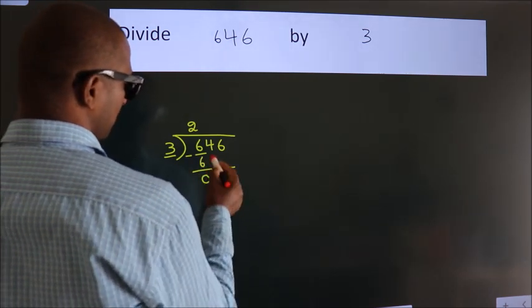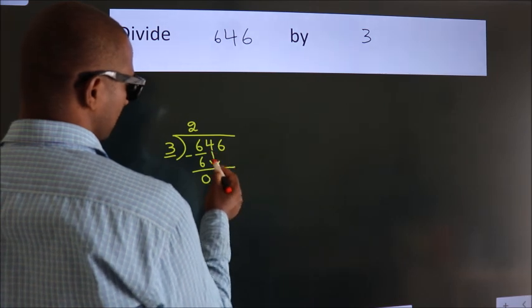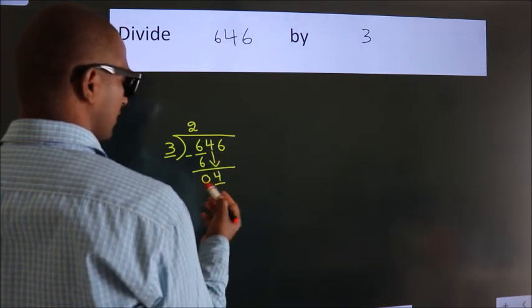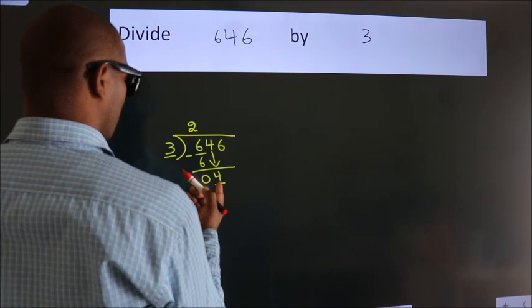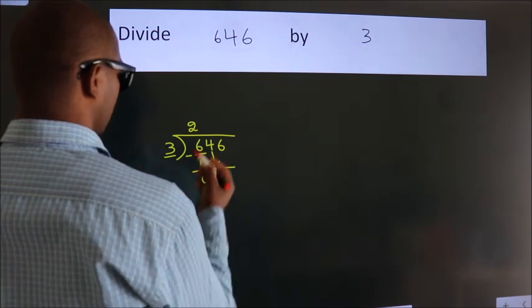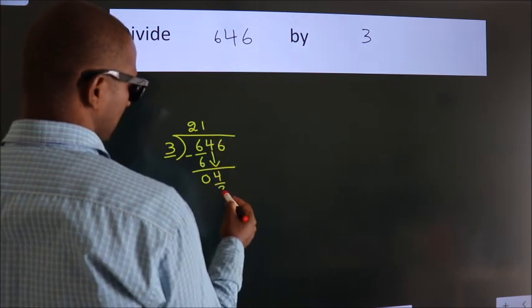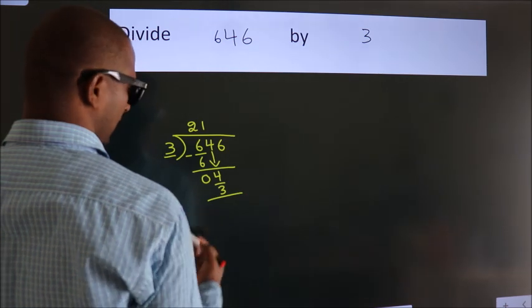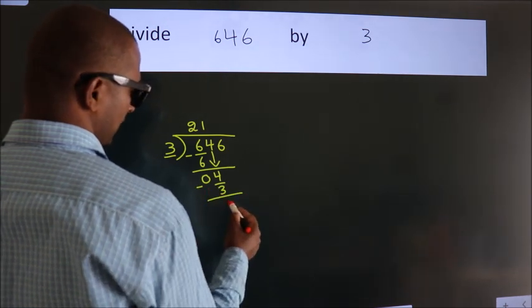After this, bring down the beside number. So 4 down. So 4. A number close to 4 in 3 table is 3 1s, 3. Now we subtract. We get 1.